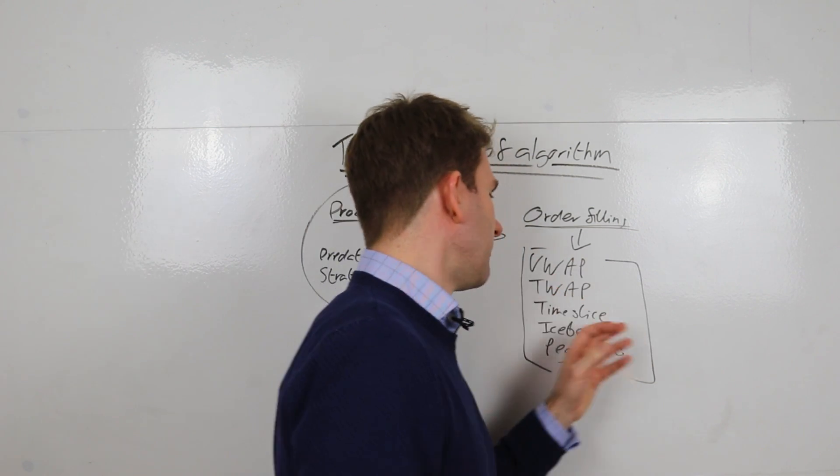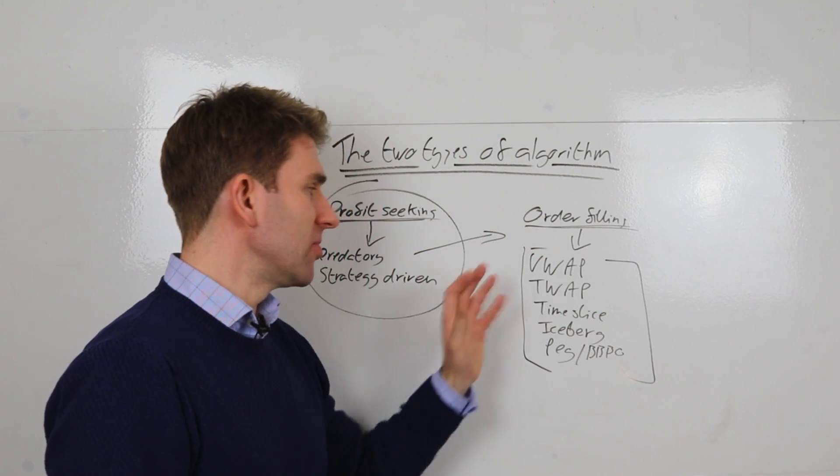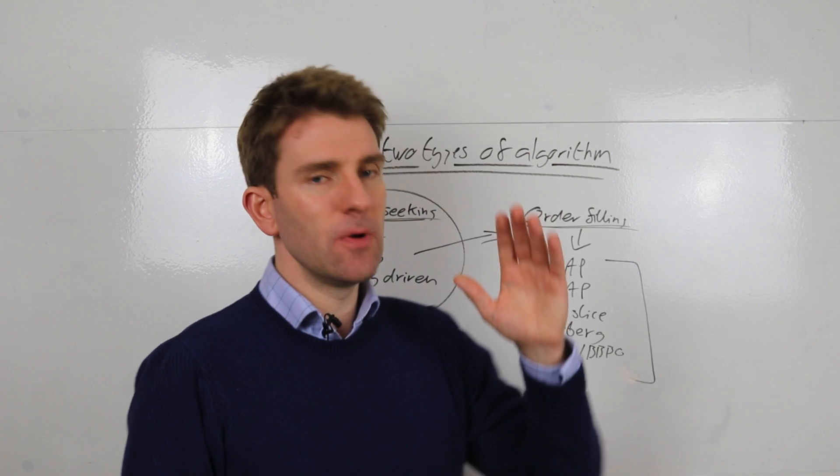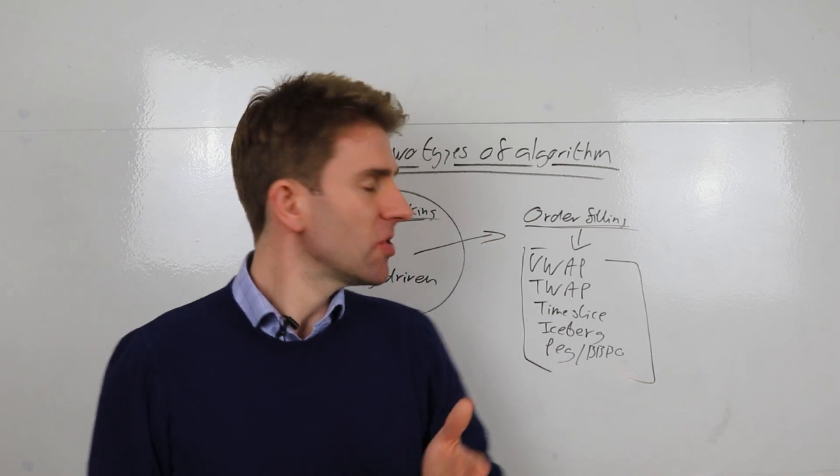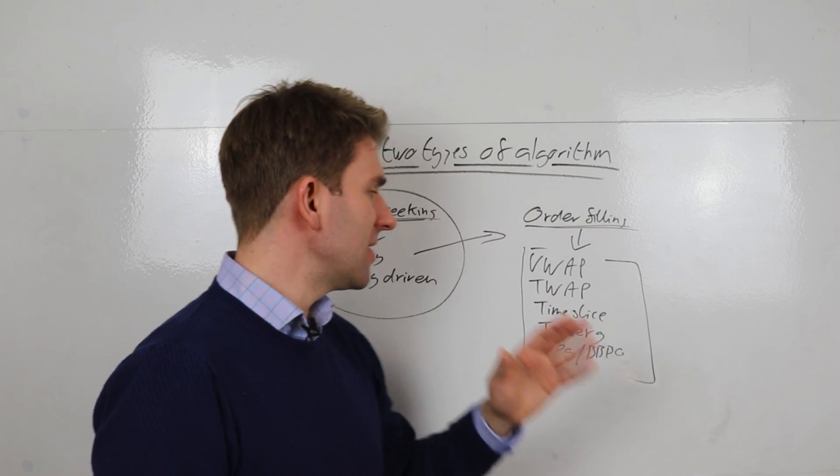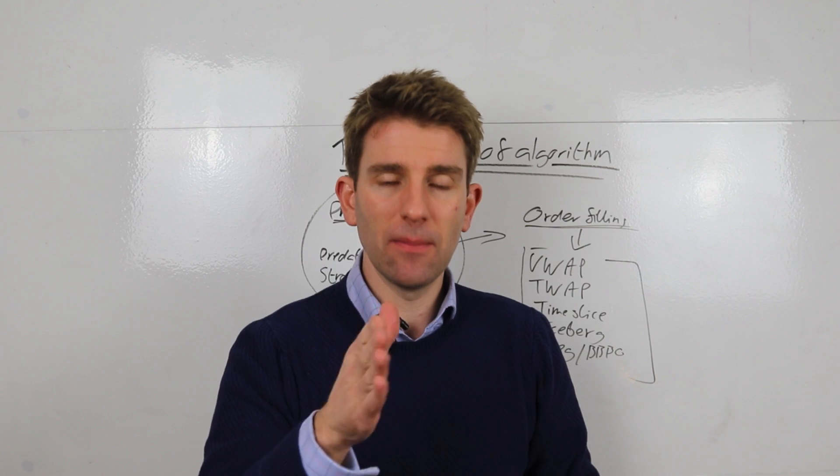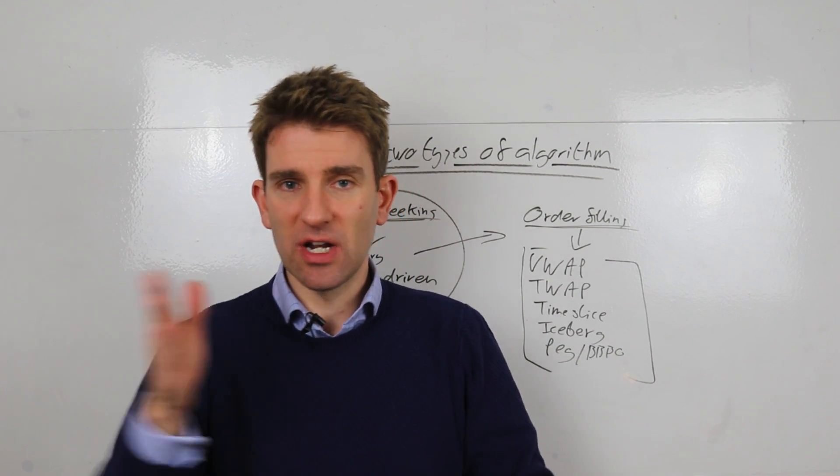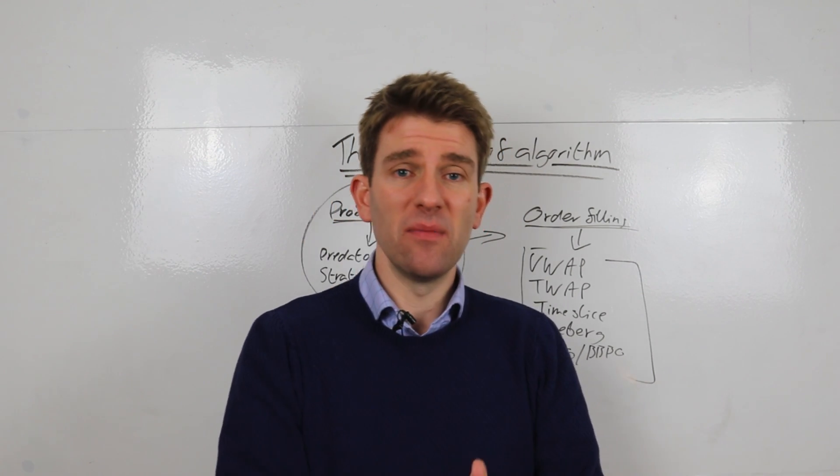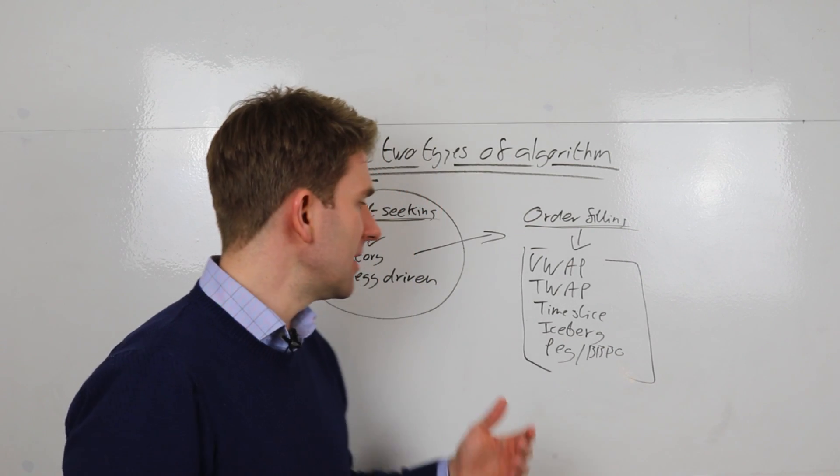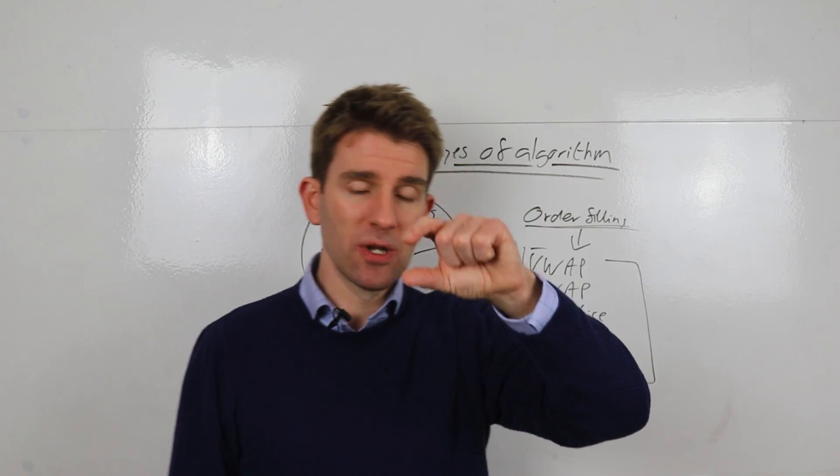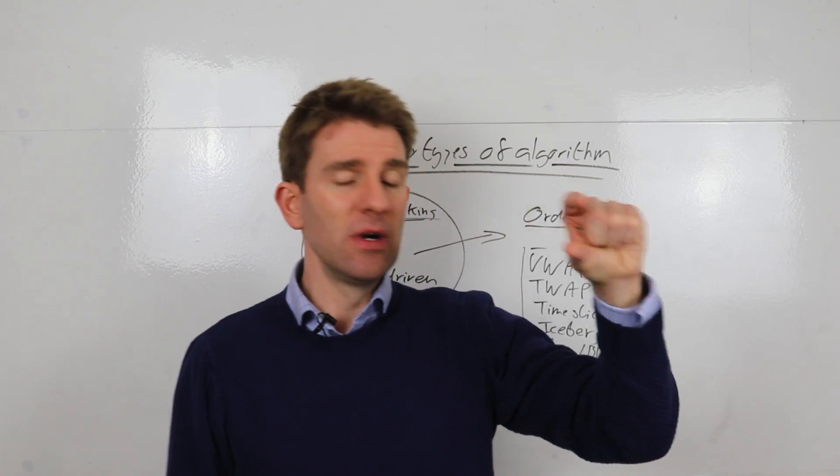TWAP, a similar kind of thing, but just time-weighted average price. So again, splitting up into time as opposed to volume. Time slice is when you're executing a specific number of shares or contracts at a set point in time. So in 15 minutes, maybe it fires off some every minute. Maybe it puts them in, you get the idea.